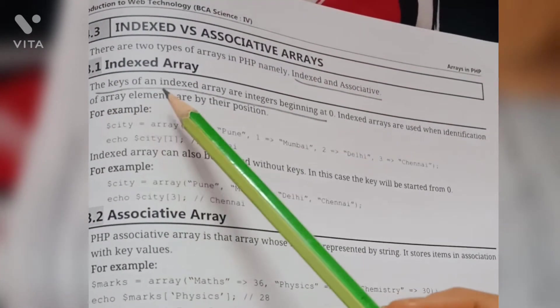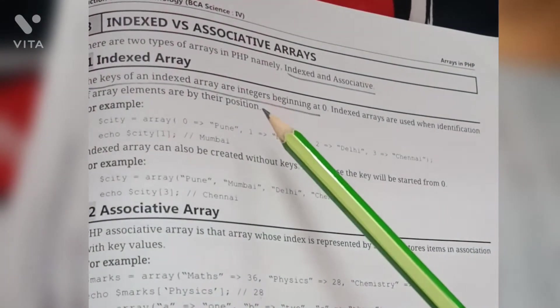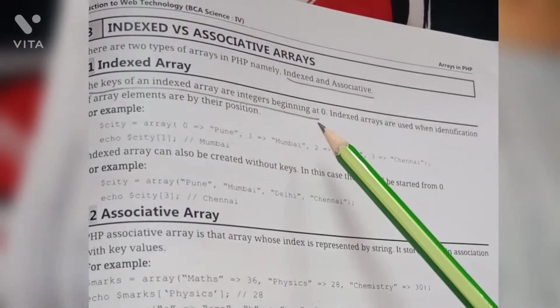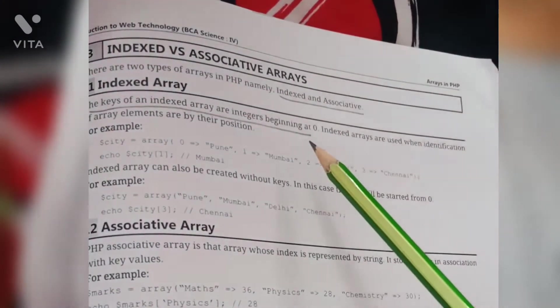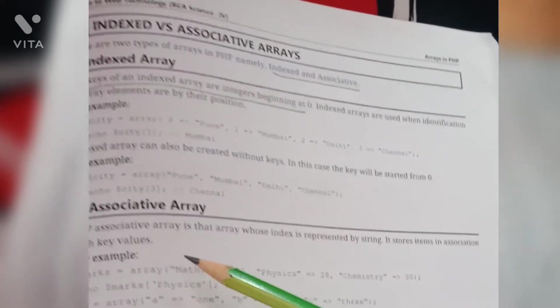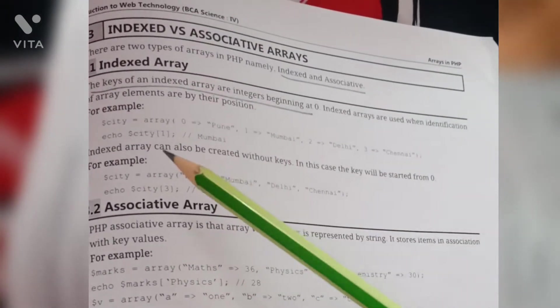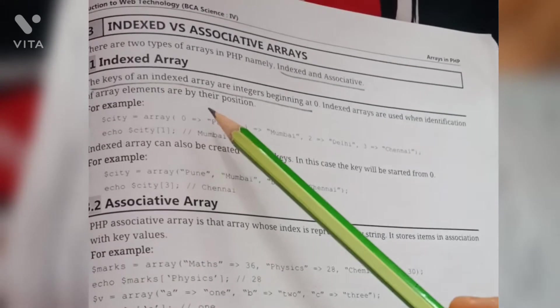The keys of an indexed array are integers beginning at zero. Indexed arrays are used when identification of array elements are by their position.